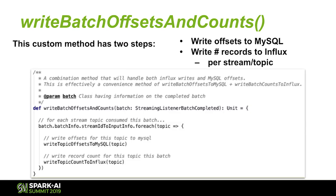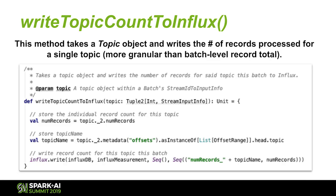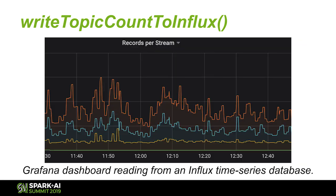There's one last function: writeTopicCountToInflux. Not only do we have access to the number of records processed in every batch, if we process multiple topics, we want to know how much we're getting out of every topic. We pull that out of the topic object and write it to Influx. This shows an application consuming three different streams at one time — the top two are kind of correlated, the bottom one not so much. If we see a spike in batch processing and a spike in one of our streams, we can see exactly which topic it came from.